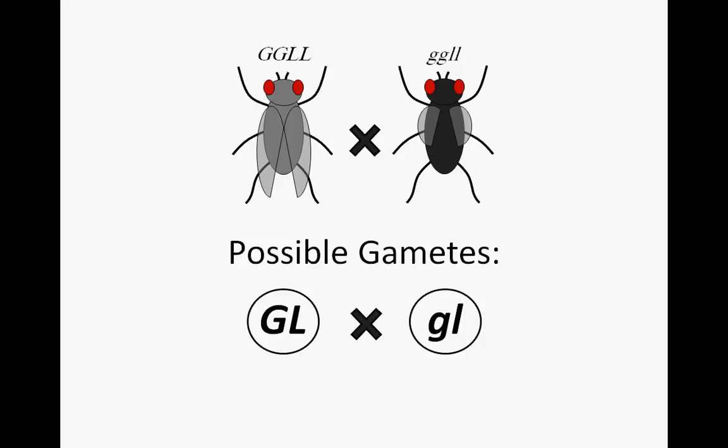Given these gamete possibilities, all offspring will be of identical genotype. Receiving big G and big L from one parent, and little G and little L from the other parent, ensures individuals that are heterozygous for both traits, bearing genotype big G, little G, big L, little L.